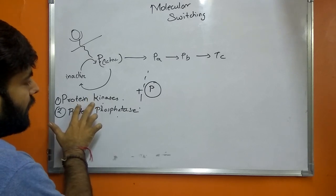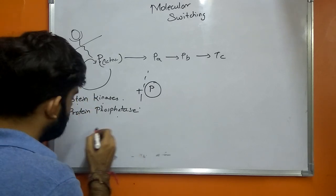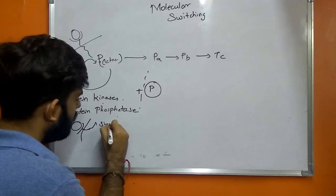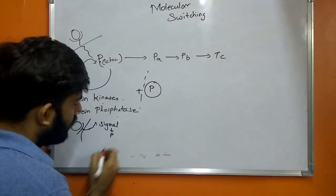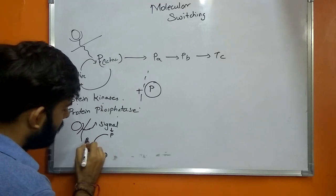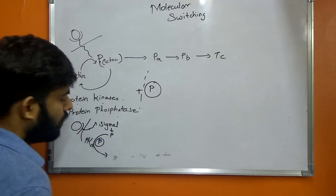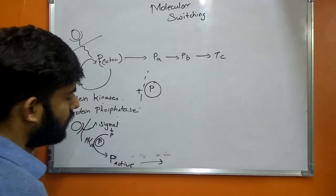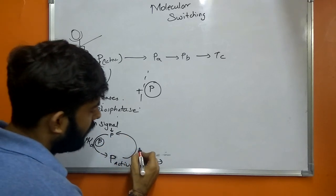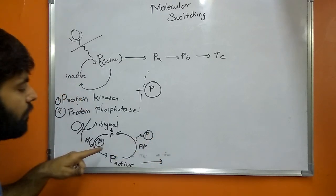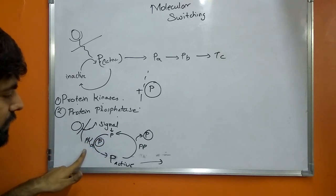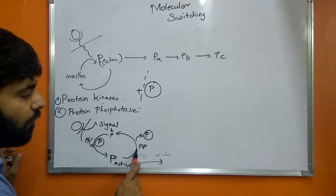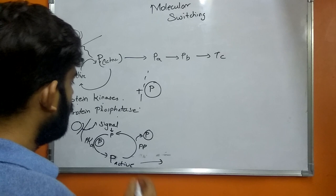Let me take an example: this is the receptor at the plasma membrane. The receptor gets activated and it sends a signal inside the cell. This signal involves a protein which is activated by the protein kinase enzyme by the addition of a phosphate group. After activation, when it relays the signal to another protein, this protein is again inactivated by the protein phosphatase enzyme by the removal of the phosphate group. So first the phosphate group is added by the protein kinase; after the protein relays the signal, it is converted back to its original inactive form by protein phosphatase.